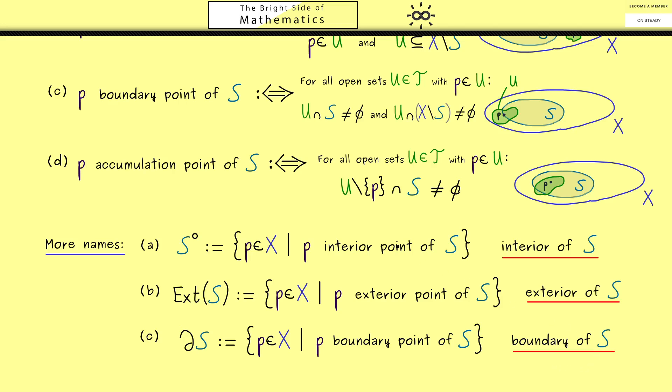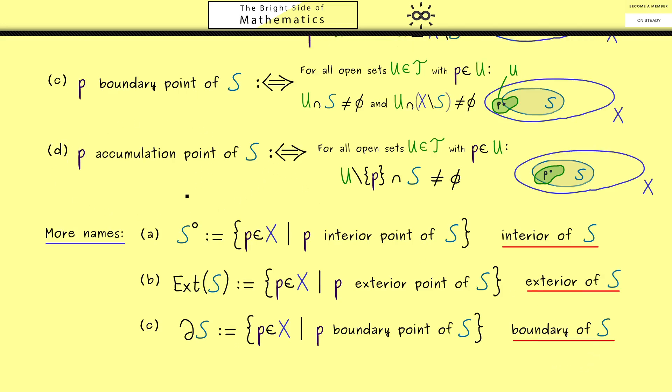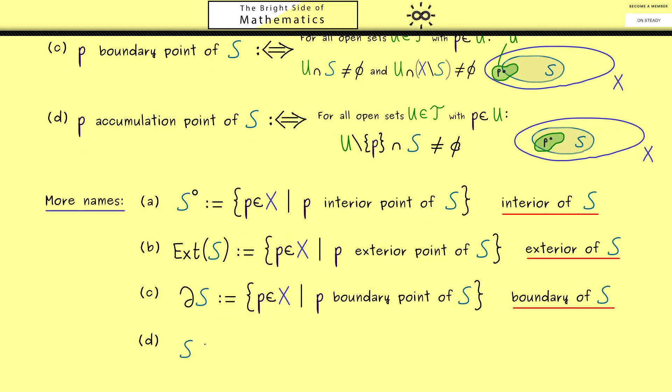Hence, only one set remains: the one about the accumulation points. And for this one, we have a rather strange notation; we call it S'. Therefore, for a set, the line in the upper index means that we have all the accumulation points in a set. In fact, one often calls this the derivative of the set S. Another term we will use here is that this is the derived set of S.